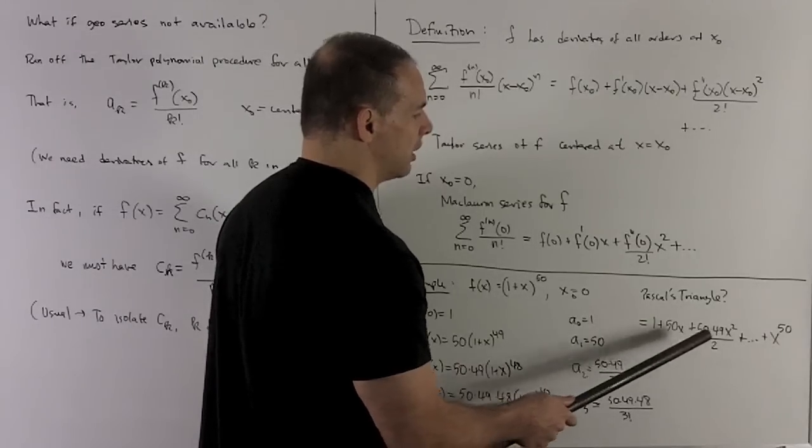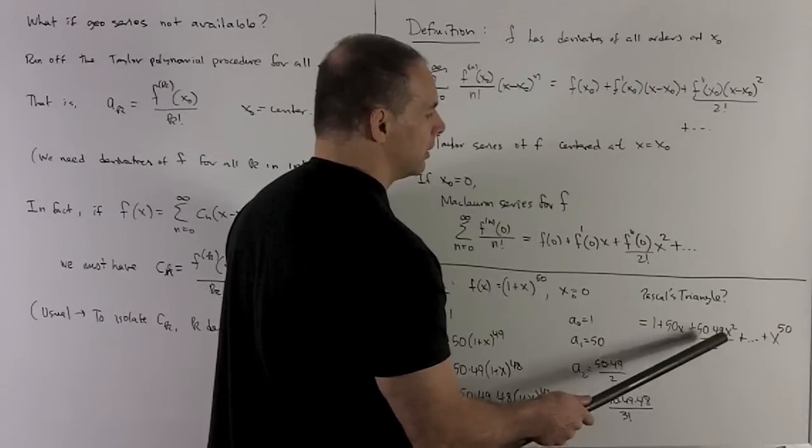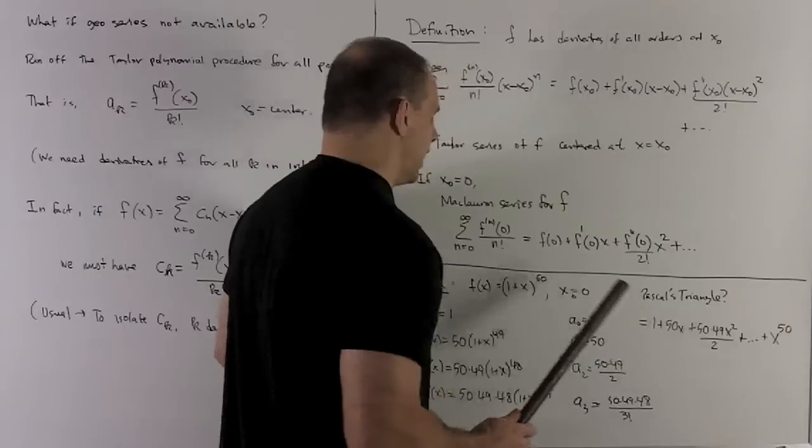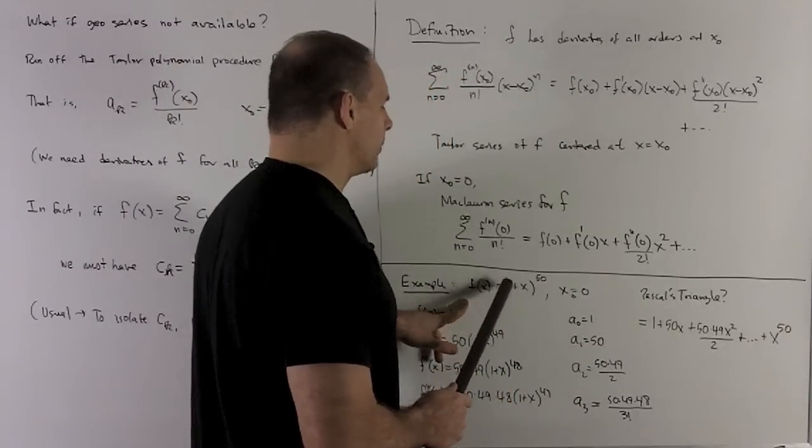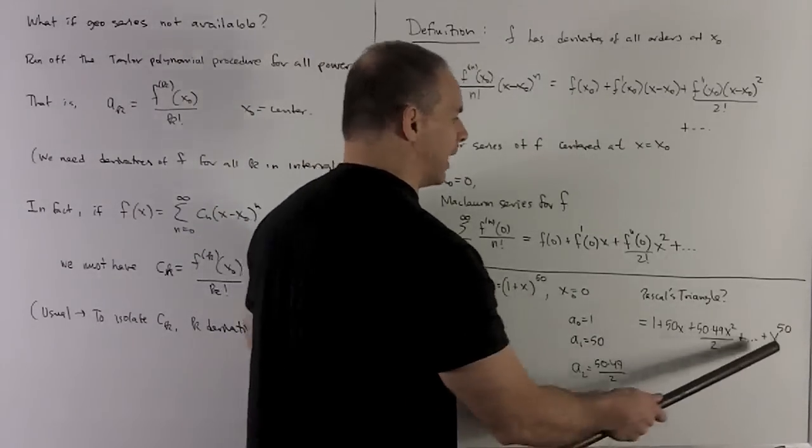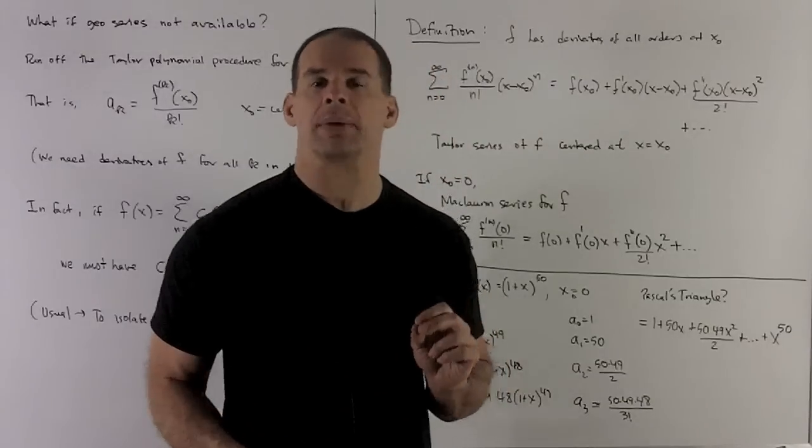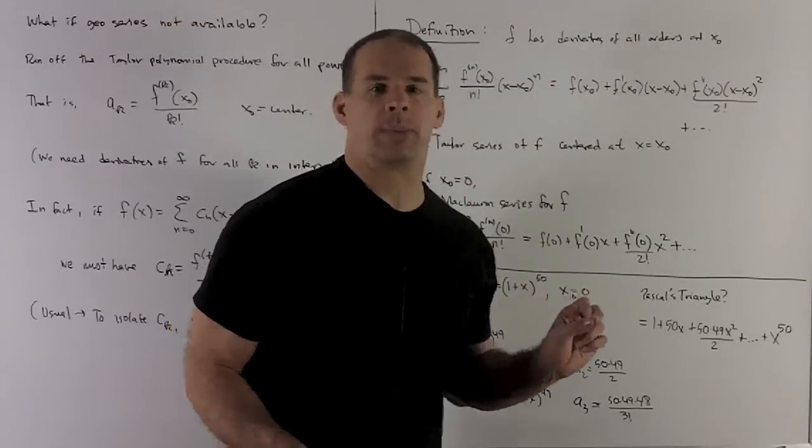So 1 plus 50x, 50 times 49 over 2, times x squared, and so on. And now since this one is actually going to be a polynomial, when we get to the top term, which is going to be x to the 50, we can stop.